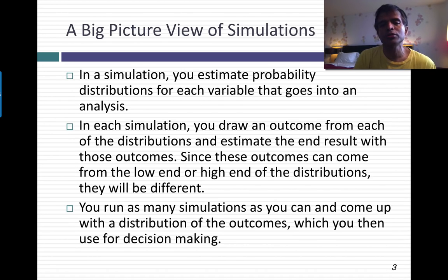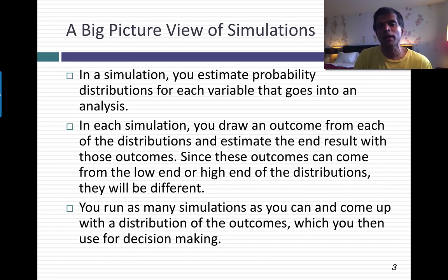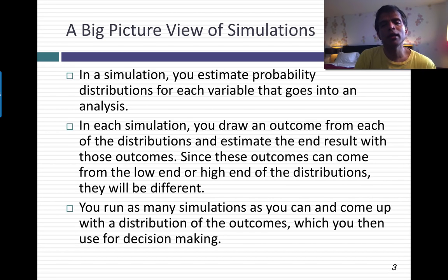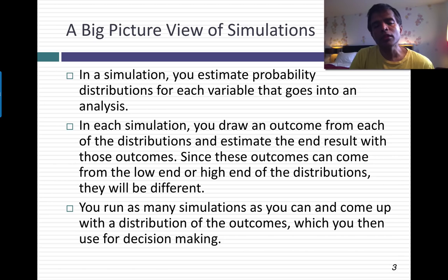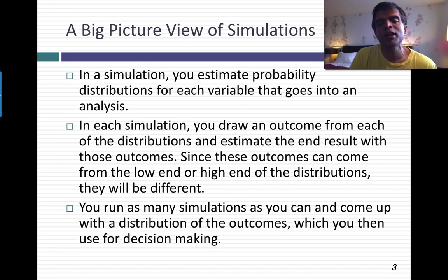What are you going to do with those distributions? What if I went in and plucked one outcome out of each distribution? Out of the revenue growth, I pick a number — let's say I get plus 7%. I go into the margin and pick a number, maybe 12%. I value the company. And then I do it again and again and again. Each time I run a simulation, I'm picking an outcome out of a probability distribution and valuing the company, getting a different value. At the end of my simulations, I'll have a distribution of values for my company rather than a single expected value — say $35 per share with a full distribution around it. That's what a simulation allows you to do.